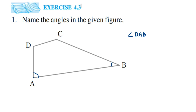Next, for vertex B, I have two points C and A. So you can write down angle ABC — I'm aiming for angle B here. You can also write it as CBA; both are the same.